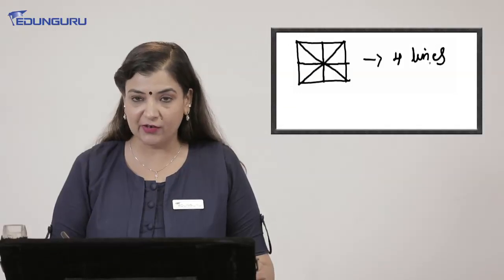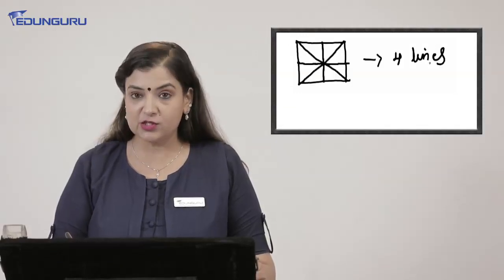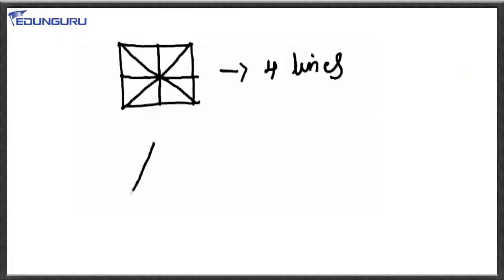If we take an equilateral triangle, look at the screen students. Here, I am drawing an equilateral triangle. It has three sides. All the sides are equal. Now, try to find out lines of symmetry. One from the vertex of one side and we will join it to the midpoint of the opposite side. So triangle has three lines of symmetry.